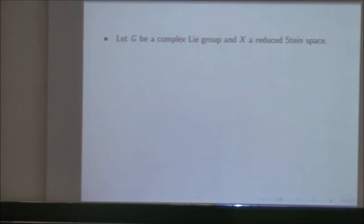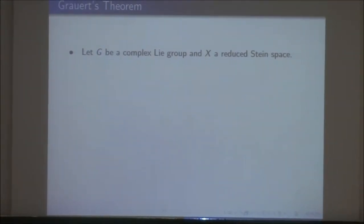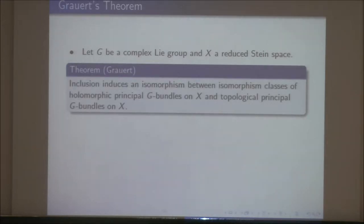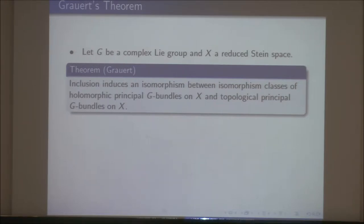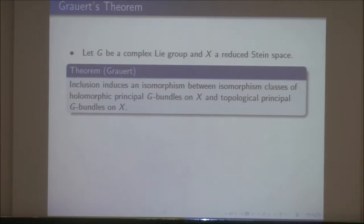Let me give you Grauert's theorem, which is a very strong form of the Oka principle — a fantastic result of Grauert's from the late 1950s. Let G be a complex Lie group and X a reduced Stein space. You can consider isomorphism classes of holomorphic principal G-bundles on X, or isomorphism classes of topological principal G-bundles on X. Grauert's theorem says these are the same: the natural inclusion from holomorphic to topological principal G-bundles is an isomorphism on isomorphism classes.